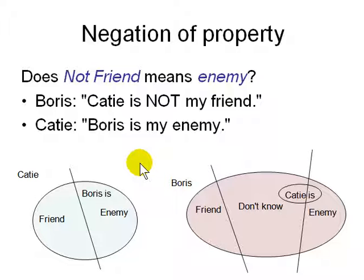For example, in this example, not friend - what does not friend mean? You're all familiar with Facebook. You have friend, you have unfriend, and you have some random stranger. Is that a friend or not a friend? Does not friend mean enemy? Well, you've got to answer these questions. So Boris says, 'Katie is not my friend.' Katie says, 'Boris is my enemy.' What's the difference between these two sentences?